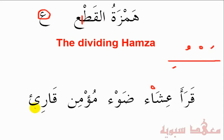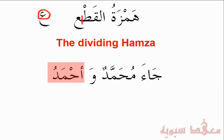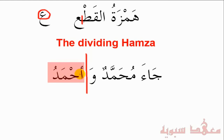Qari' means 'One who recites' and Qara'a means 'He read.' Now the question: why do they call it the Dividing Hamza or the Cutting Hamza? Here we have the sentence Ja'a Muhammad wa Ahmad — 'Muhammad and Ahmad came.' The reason why it's called the Dividing Hamza is because it divides the word before it, so when pronounced they are pronounced as two separate words: 'Wa' and 'Ahmad.' This Hamza is always pronounced regardless of its position in the sentence, as opposed to the other Hamza we'll speak about later.